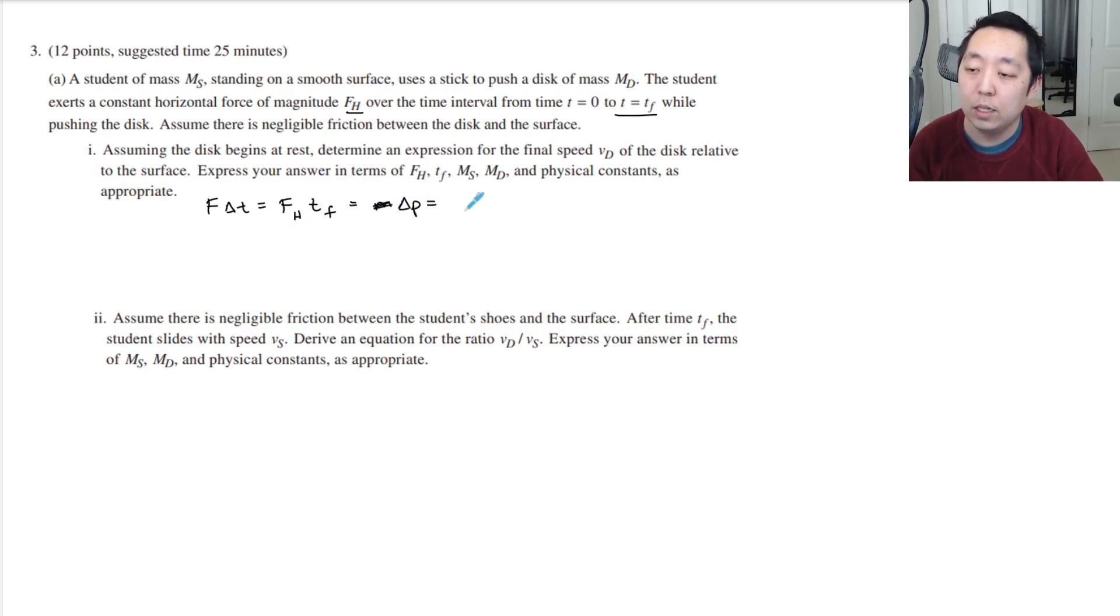That impulse is going to cause a change in momentum. The mass of the disk is going to change the velocity. He's going to start with no velocity and end with a final velocity VD. So we have impulse equals MD times VD, and VD is just simply the impulse FH times TF divided by MD. This is impulse momentum.